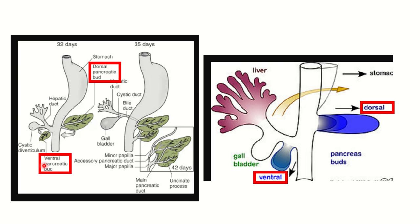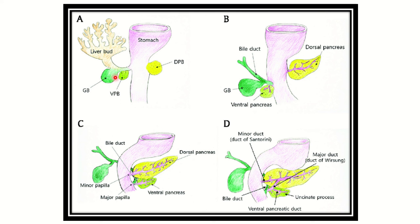In the second picture, we can again see the dorsal pancreatic bud alongside the stomach and duodenum. On the other side is the ventral pancreatic bud, and we can also see the gallbladder bud and liver bud — from which the gallbladder and liver originate. So the pancreas is originated from the dorsal and ventral pancreatic buds.